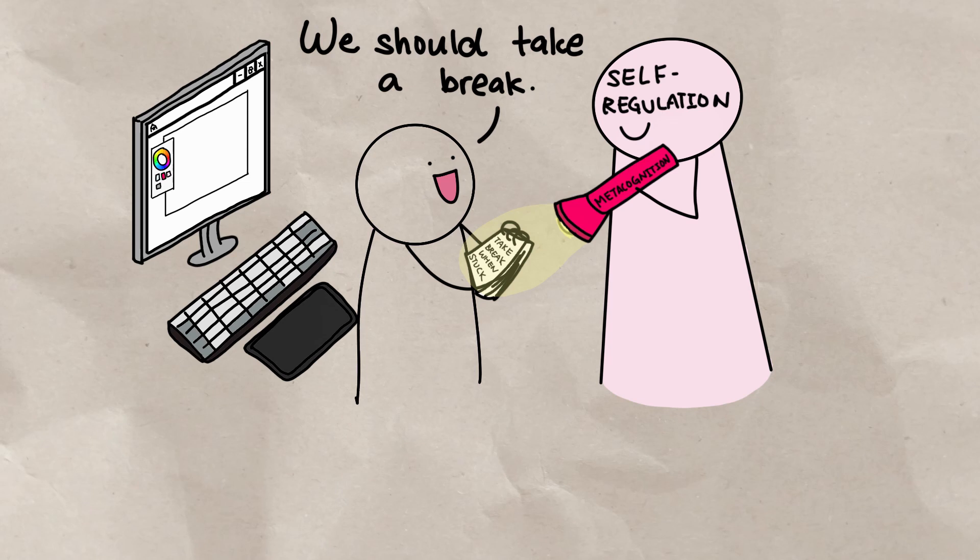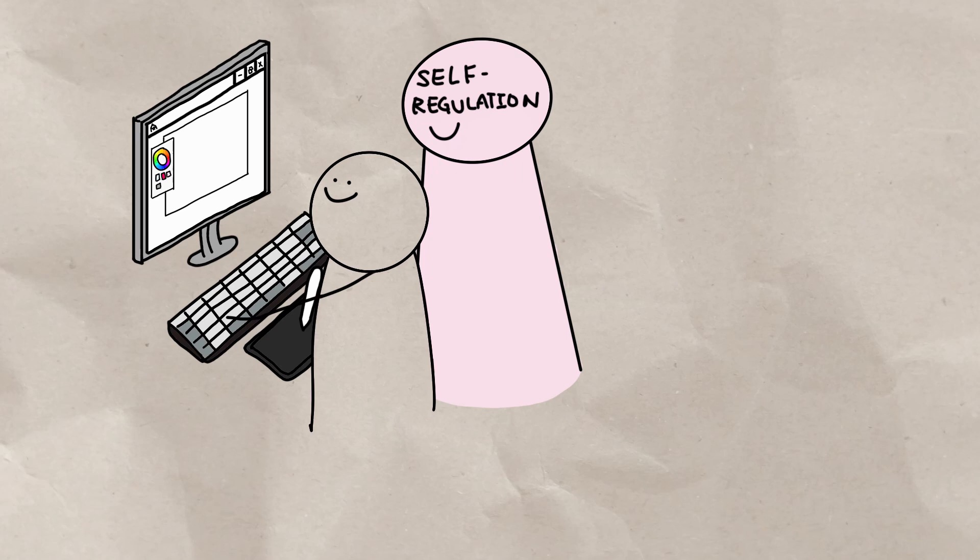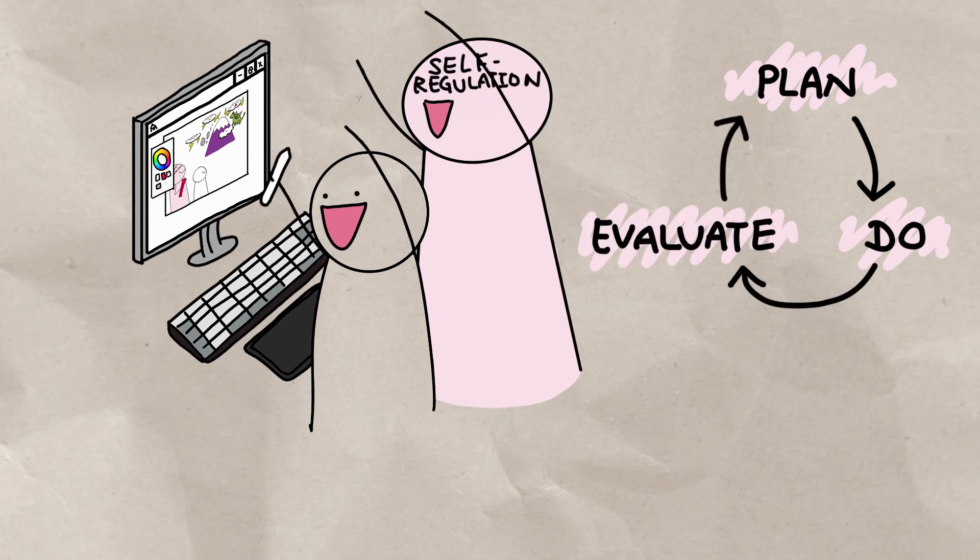Your metacognition, this awareness of how you are learning or doing something, is what will allow you to be strategic and self-regulate, to iteratively plan, try, and evaluate.